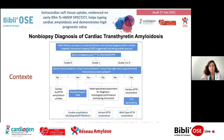Le contexte, vous connaissez tous cet algorithme qu'on utilise en pratique quotidienne pour le diagnostic différentiel entre les amyloses AL et transthyrétine, les deux principales les plus fréquentes. Cette scintigraphie osseuse et la recherche de gammapathie monoclonale permettent, en fonction de la présence ou non de gammapathie, d'aller à la preuve histologique pour l'amylose AL, et en cas d'absence de gammapathie avec une fixation sur la scintigraphie osseuse, de poser le diagnostic d'amylose transthyrétine.